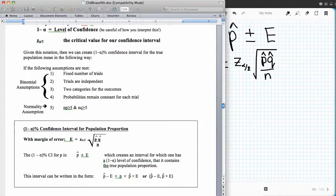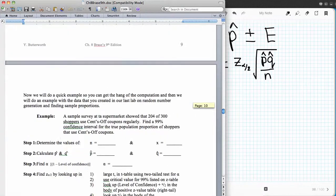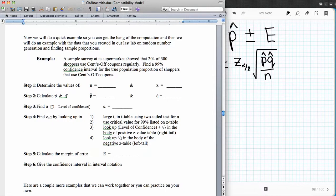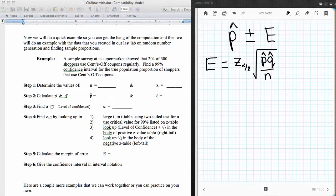So as you see, it's no different than the confidence intervals that we were doing in any of the other sections here. So we're going to take a look at this example. A survey at a supermarket showed that 204 out of 300 shoppers use cents-off coupons regularly. Find a 99% confidence interval for the true population proportion of shoppers that use cents-off coupons. So first off, I'm going to write down here that my p-hat is equal to the number of shoppers that use the cents-off coupons, 204 out of the number of shoppers that were surveyed, 300. That forms my p-hat.